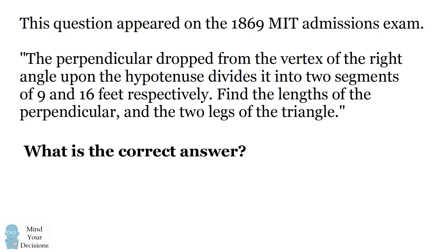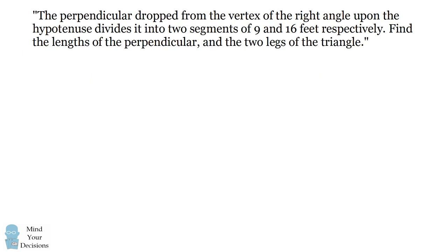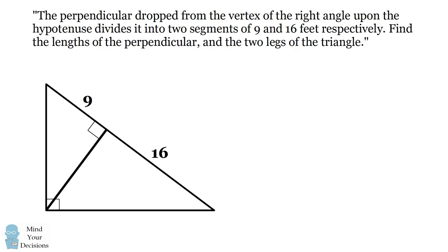Give this problem a try and when you're ready keep watching the video for the solution. We'll get started by drawing a diagram. We have a right triangle. We're going to draw a perpendicular from the vertex of the right angle to the hypotenuse. This divides the hypotenuse into two segments of 9 and 16 feet. We need to find the lengths of the perpendicular and the two legs of the triangle.